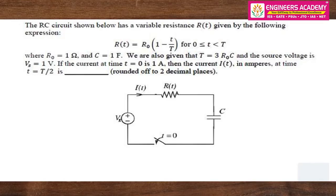Hello students. This question was asked in the 2019 GATE exam in the electronics department. The RC circuit shown has a variable resistor R(t) given by the expression R(t) = R0(1 - t/T) for t from 0 to T, where R0 = 1 ohm and C = 1 farad. T is equal to 3·R0·C and the source voltage Vs = 1 volt. If the current at t = 0 is 1 ampere, find the current i(t) at t = T/2.